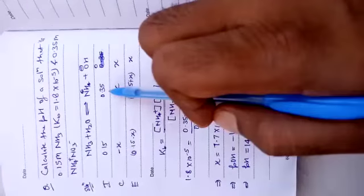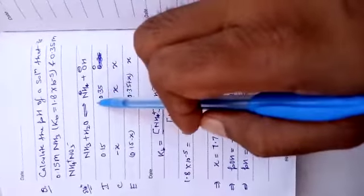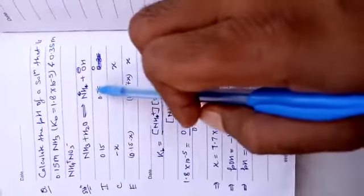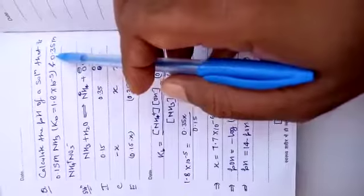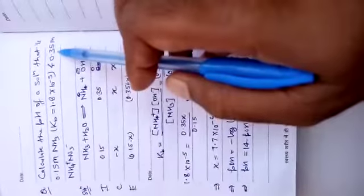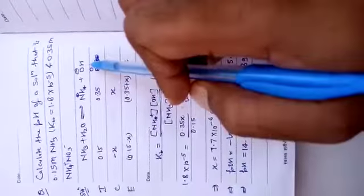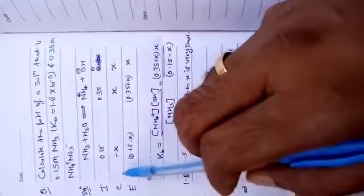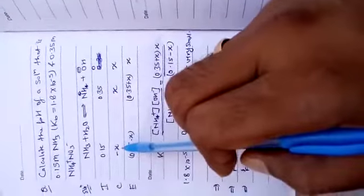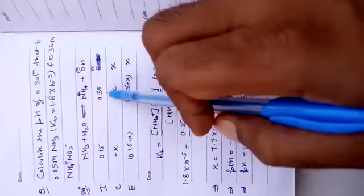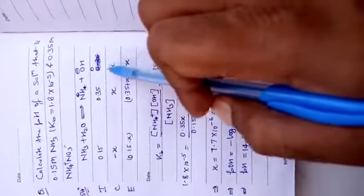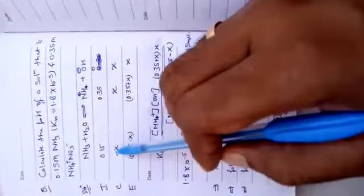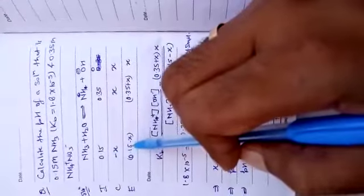And ammonium nitrate gives ammonium ion. That's why initially the concentration of ammonium ion will be the concentration of ammonium nitrate, 0.35. And initially OH- concentration is 0. Now what is the concentration? Dissociate is minus x, and it will give ammonium ion x and OH- ion x. So at equilibrium we will add this: 0.15 minus x, 0.35 plus x, and x.